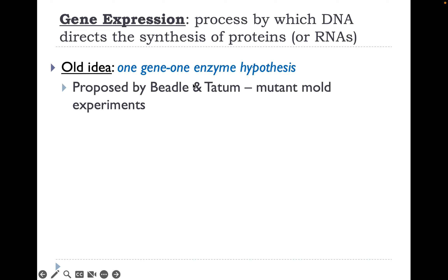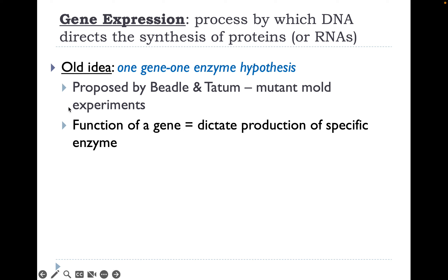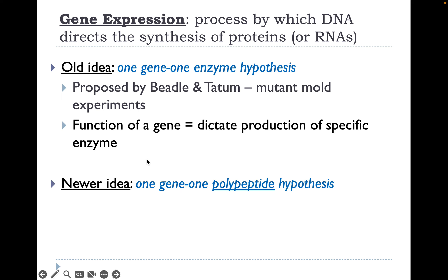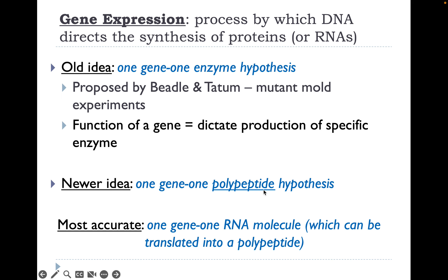This was proposed by Beadle and Tatum. They thought the function of a gene dictated the production of a specific enzyme. Our newer idea was that one gene coded for one polypeptide. The most accurate hypothesis we have to date — our working understanding in biology right now — is that one gene codes for one RNA molecule, which can be translated into a polypeptide.